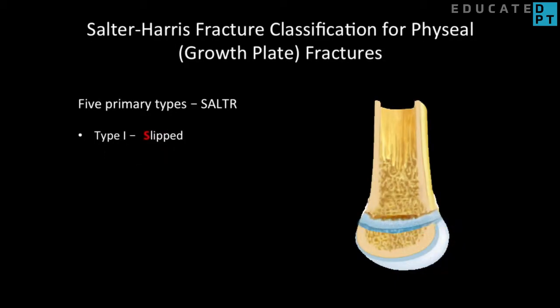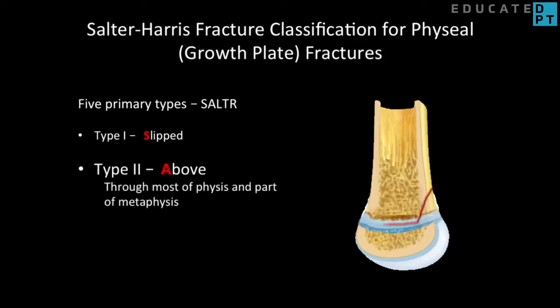Type 2, remembered as 'above' in the mnemonic, is a fracture through part of the growth plate and into the metaphysis, which is the section just above the physis. These make up about 75% of physeal fractures and may cause minor changes to bone growth.